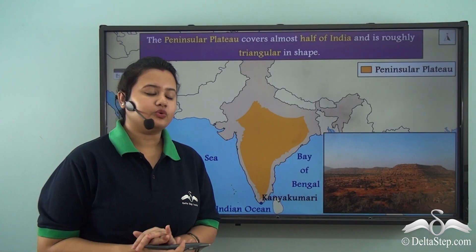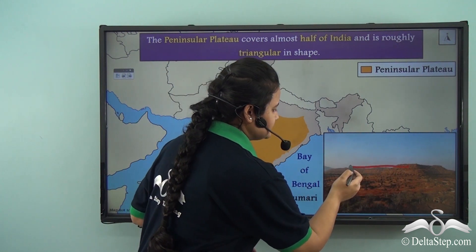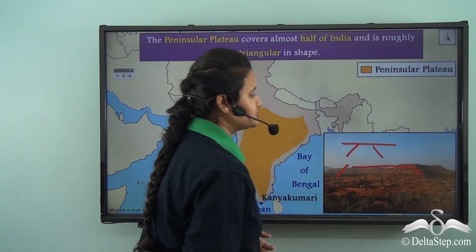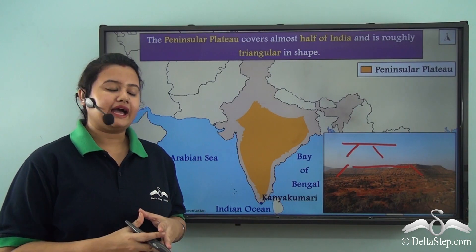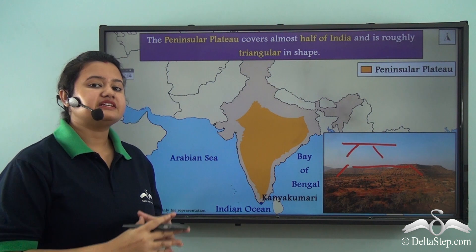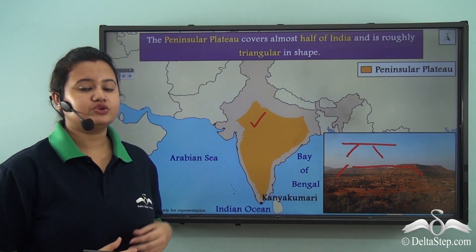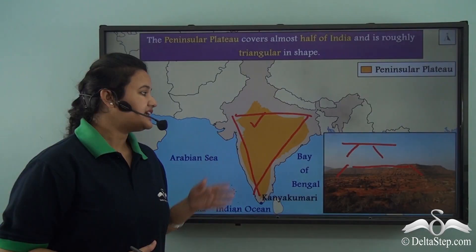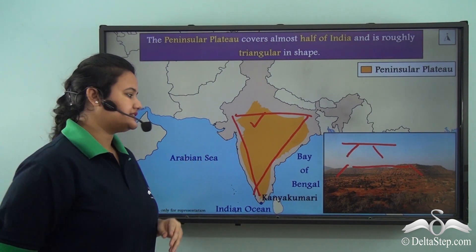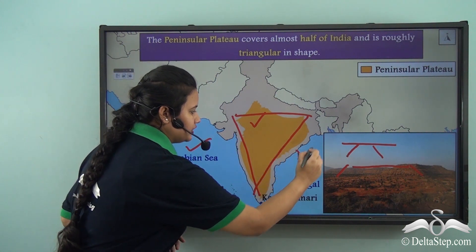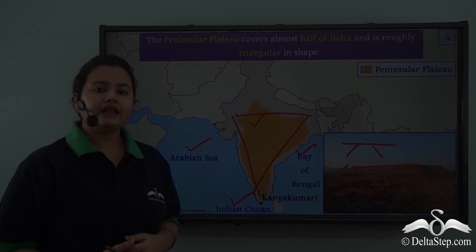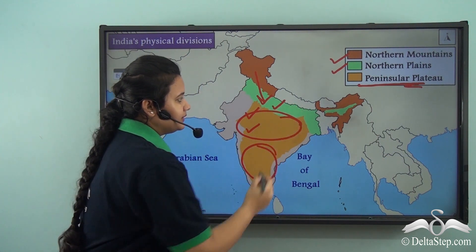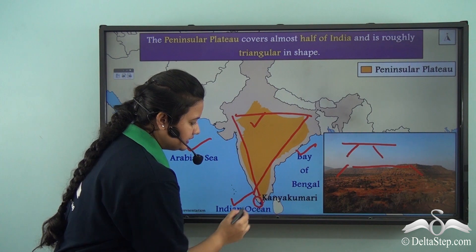A plateau is a highland with a flat top and steep slopes — it resembles a table and is therefore also called a tableland. If you view the Peninsular Plateau from above in an aerial view, you will find that it is roughly triangular in shape, bounded by water bodies on three sides: the Arabian Sea in the west, the Bay of Bengal in the east, and the Indian Ocean in the south. The Peninsular Plateau extends from the Northern Plains in the north to Kanyakumari in the south.